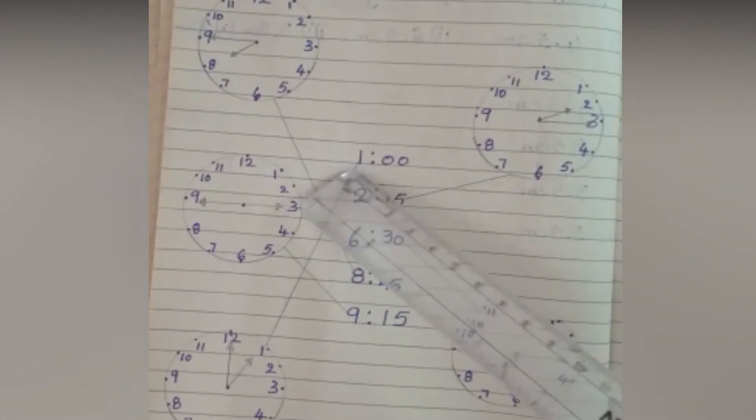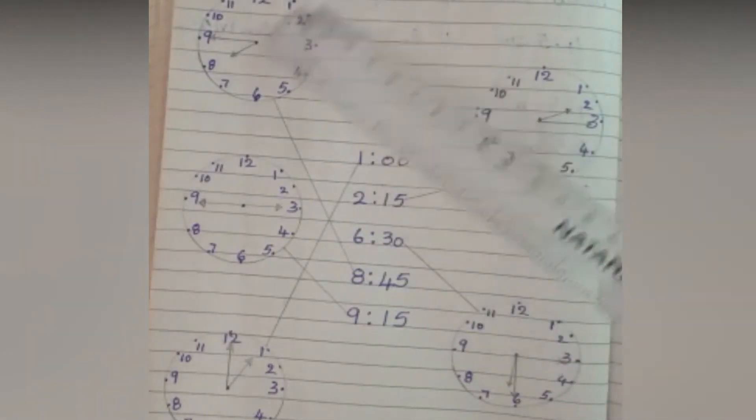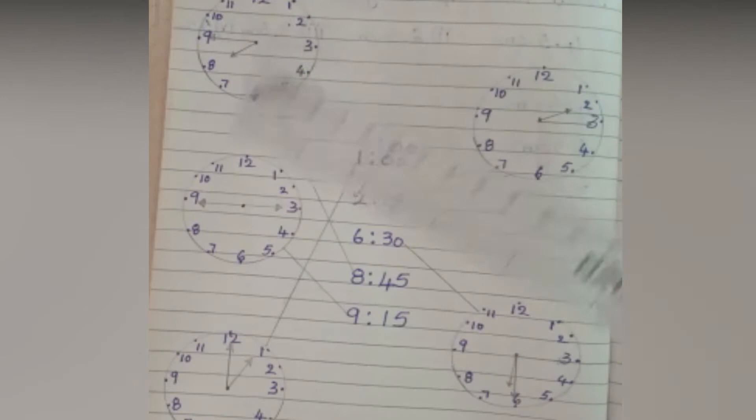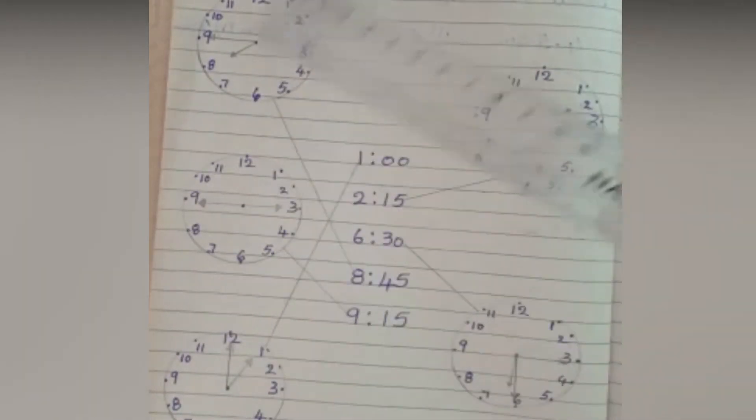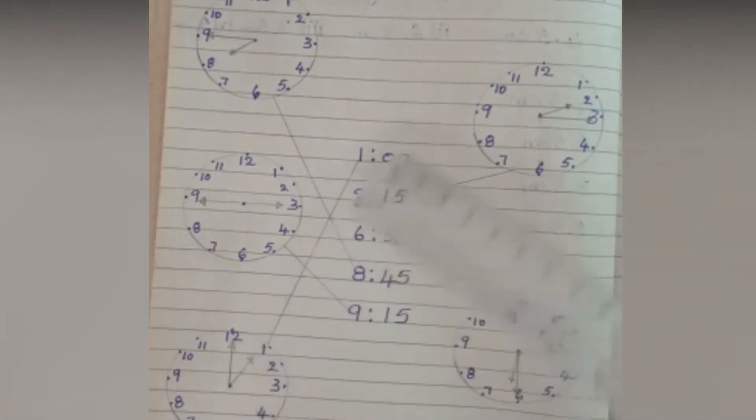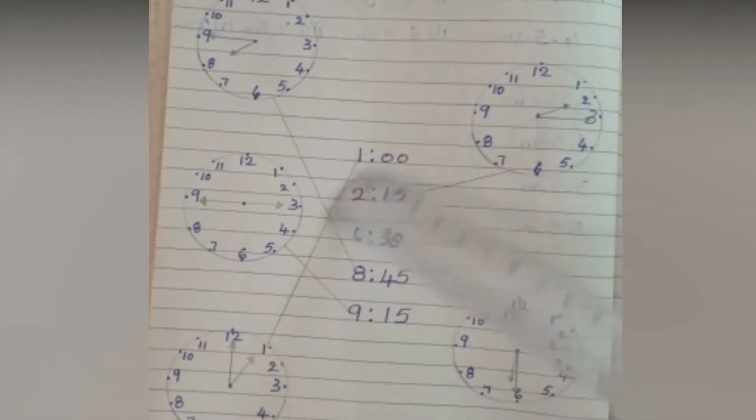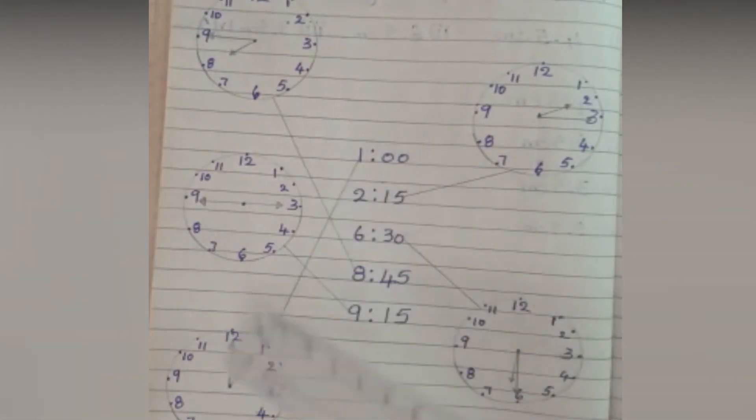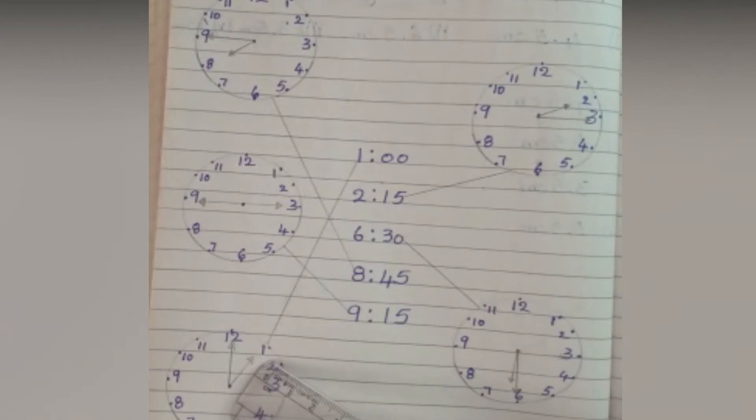See here, in the digital clock it is 1 o'clock. Now we have to check where 1 o'clock is showing in the analog clocks among these five. Yes, see here, it is showing 1 o'clock. Now draw a line between these two, the analog clock and digital clock.